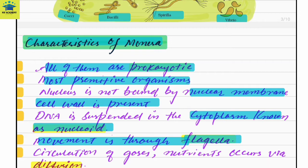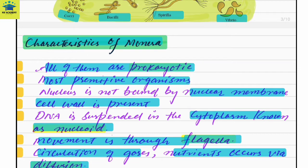Movement in bacteria is through the flagella, which is the locomotory organ. Circulation and exchange of gases and nutrients in Monera occurs via diffusion.